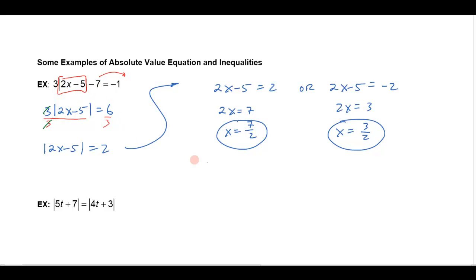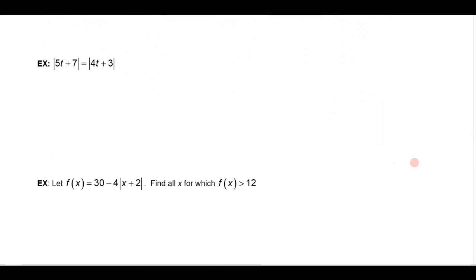Again, the key is to first isolate the absolute value. In this second example I have two absolute values: the absolute value of 5t plus 7 equals the absolute value of 4t plus 3. You do basically the same thing. The key to understanding this is that the expression inside the absolute value could either be positive or negative, and the same thing on the other side. So technically you could have a positive 5t plus 7 equaling a positive 4t plus 3, or a positive 5t plus 7 equaling a negative 4t plus 3.